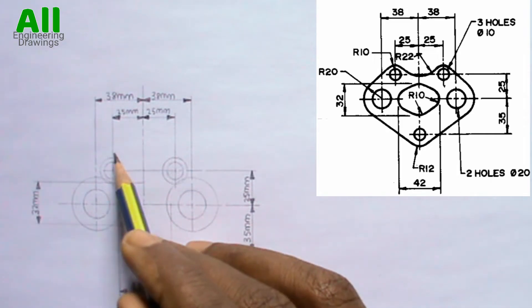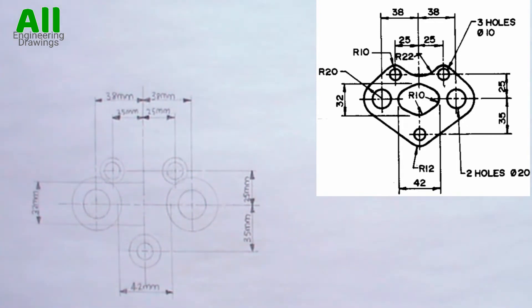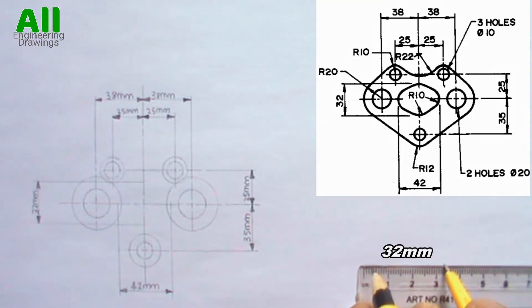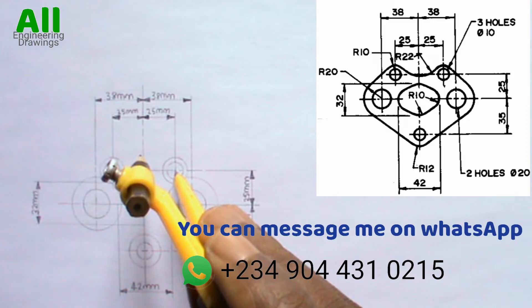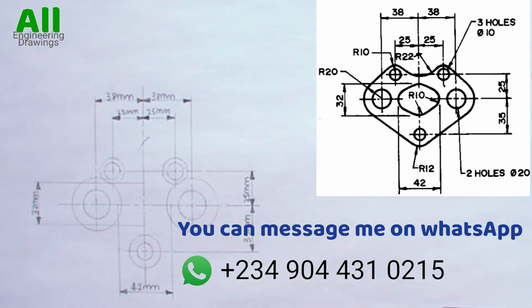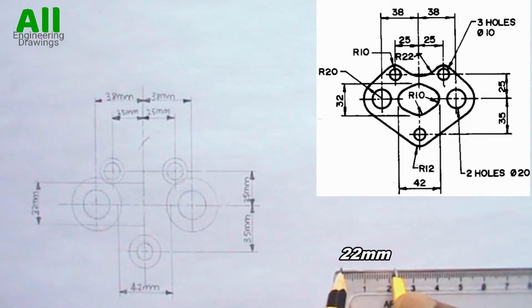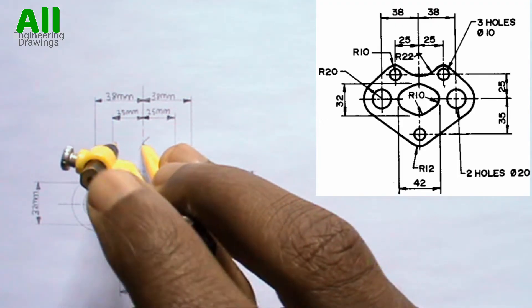Since the radius of the external tangential arc at the top here is 22mm and the radius of this circle here is 10mm, we will add the radii — that is 10 plus 22 — which gives us 32mm. So adjust your compass to a radius of 32mm, then place your compass at this point where the arc intersects, that is the center of this circle, and cut an arc on the center line. After that, adjust your compass to a radius of 22mm, then place your compass on the point where the arc intersects the center line and draw the tangential arc.